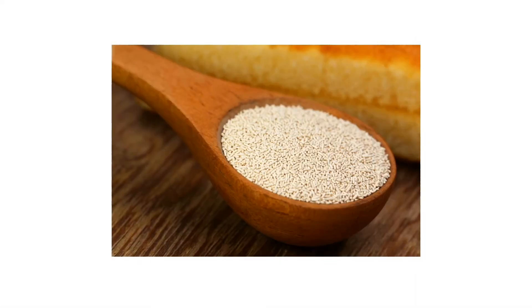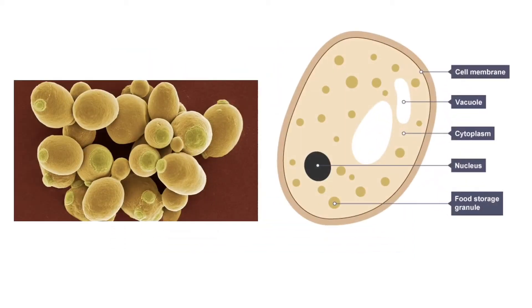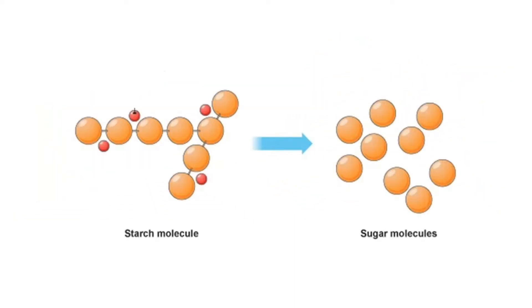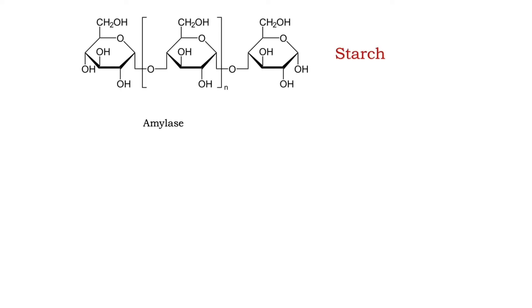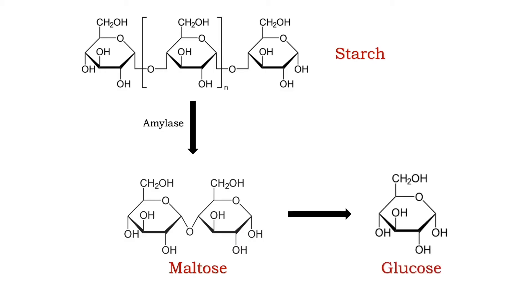Then, yeast is added. Yeast are single-cell microorganisms classified as a member of the fungus kingdom. But yeast cannot start in flour. It needs simpler sugar to feed on. Luckily for us, when hydrated, flour contains the enzyme called amylase, necessary to break down starch into simpler sugars like maltose. This process is known as hydrolysis. Then, the sugars continue to break down into glucose by the maltase in yeast.